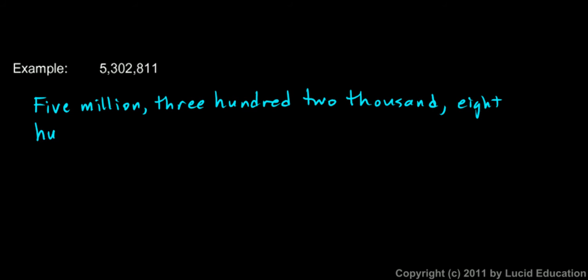We're not going to actually write a single digit. Everything is going to be a word. So instead of the digit 5, we write the word. And we write 5 million, comma, 302 thousand, comma, 811. That is that number written in words. 5 million, 302 thousand, 811.